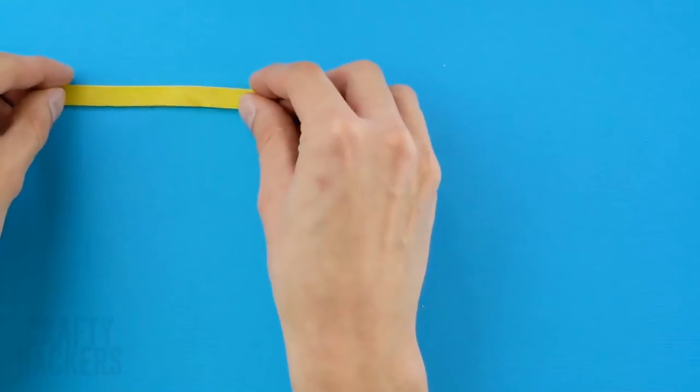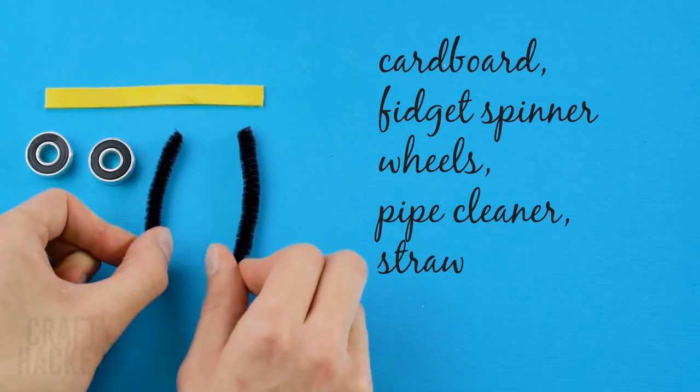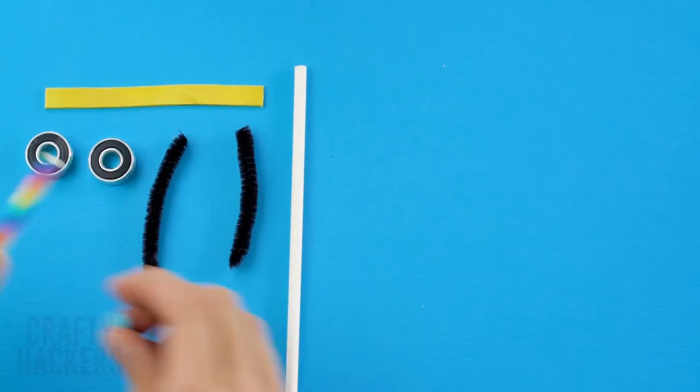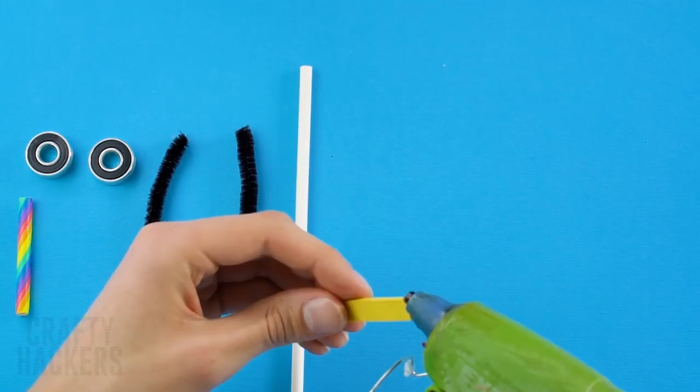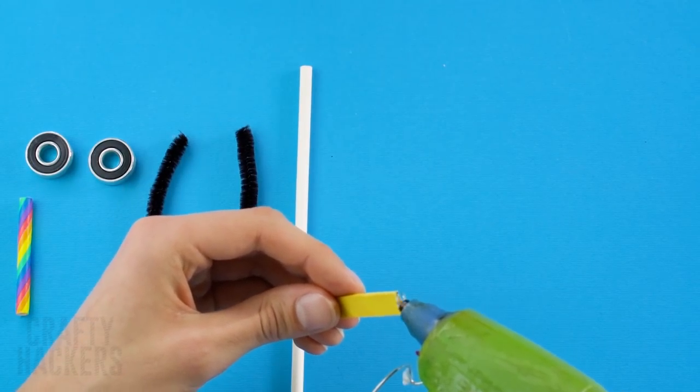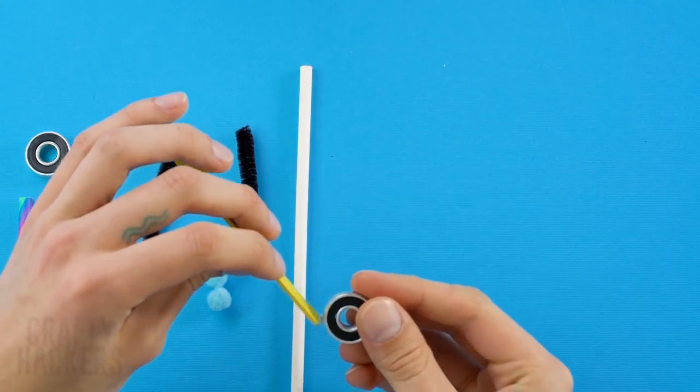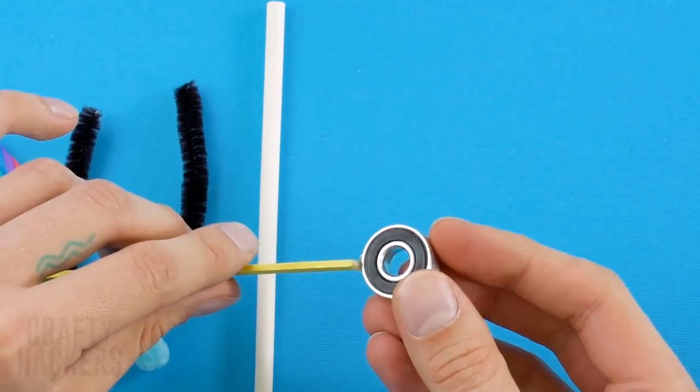Scooter. Barbie loves adventure. So let's give her a set of wheels so she can cruise around the neighborhood. You'll need a strip of cardboard, these fidget spinner pieces, a pipe cleaner, and a couple of straws. Glue the fidget spinner pieces to the ends of the cardboard strip like this.